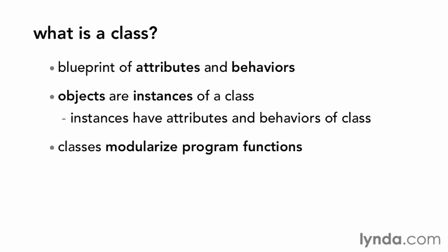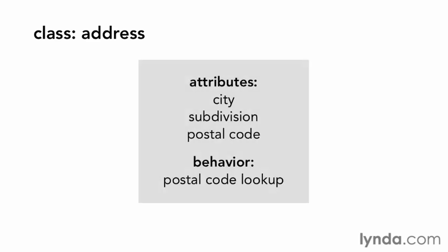Each class modularizes program functions by separating distinct features with as little overlap as possible. Using the example of a physical address again, you can define a class for an address. The class address has several attributes, like the city and subdivision, and has the behavior of being able to look up a postal code given these attributes.